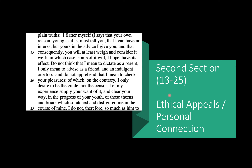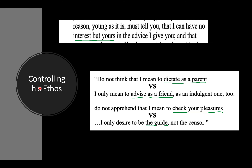In the second section, Chesterfield makes his assertions. A lot of this section is about ethical appeals — personal connection. What Chesterfield is doing is controlling his ethos. He says: 'Do not think that I mean to dictate as a parent — I mean to advise as a friend. I don't mean to check your pleasures. I want to be a guide, not a censor.' So he is controlling his ethos with antithesis.